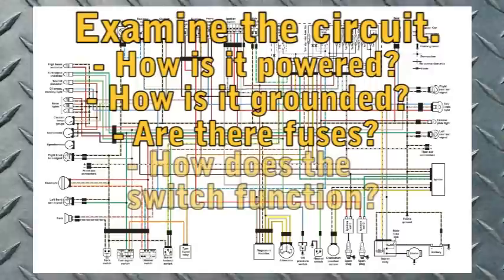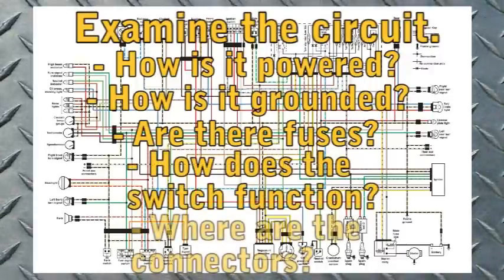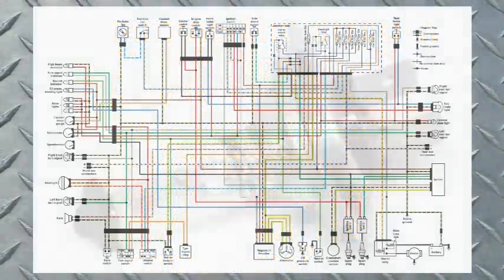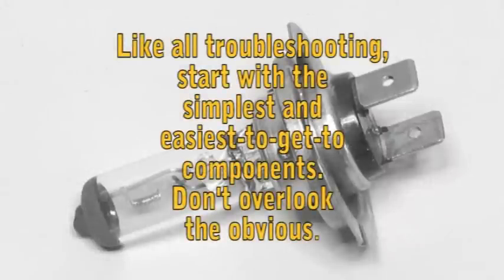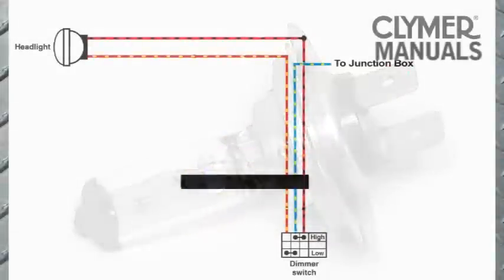How does the switch function and identify the connectors. Now, of course, if the headlight was inoperative we'd assume the bulb is bad and start there. But bear with me as we use this as our test circuit and think how we would apply this same systematic approach to one that might not provide such an obvious place to start as a bad bulb.